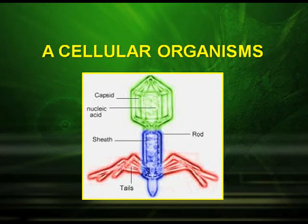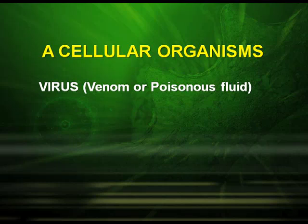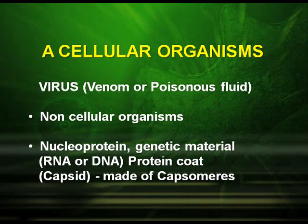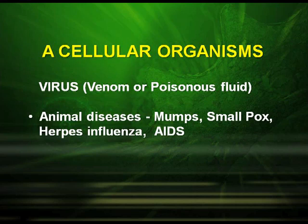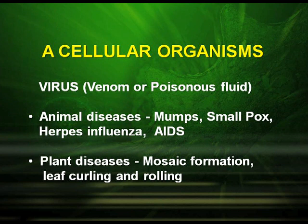In the five kingdom classification, acellular organisms are not mentioned. But there are certain acellular organisms like viruses, viroids, and lichens. The word virus means venom or poisonous fluid. They are noncellular organisms and are nucleoproteins; the genetic material is either DNA or RNA. The protein coat is called a capsid, which is made up of capsomeres as subunits. Animal diseases caused by viruses include mumps, smallpox, herpes, influenza, and AIDS. Plant diseases caused by viruses include mosaic formation, leaf curling, and rolling.